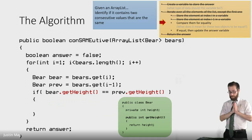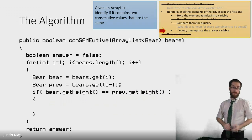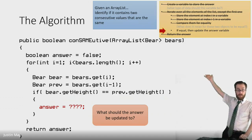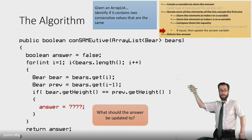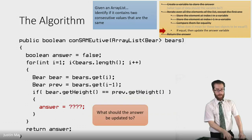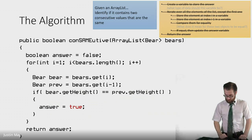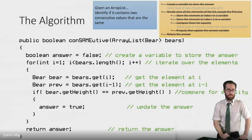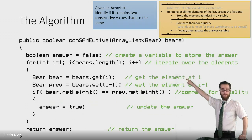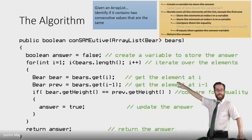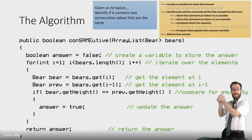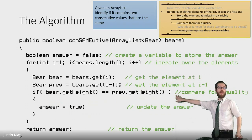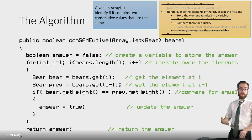We should look at the bear methods we were given and use getHeight(). What we really want to compare is the height of the bear to the height of the previous bear — see if those are equal. If those are equal, then we update our answer variable. It was false; we just found two bears next to each other — 'bear' and 'prev' — with the same height, so we change the answer to true. We get our answer, default it to false, loop through everything skipping the first one, get bears at index i and i minus one, compare their heights, and change the answer to true if heights are equal.